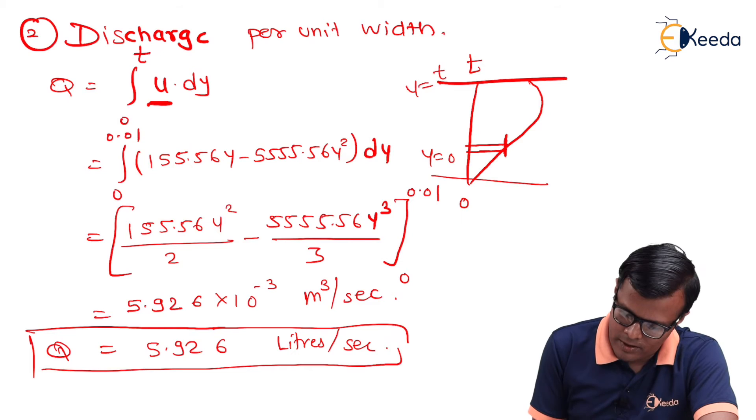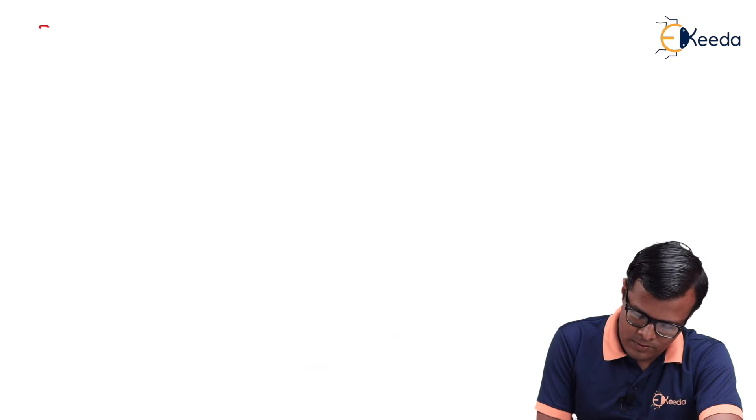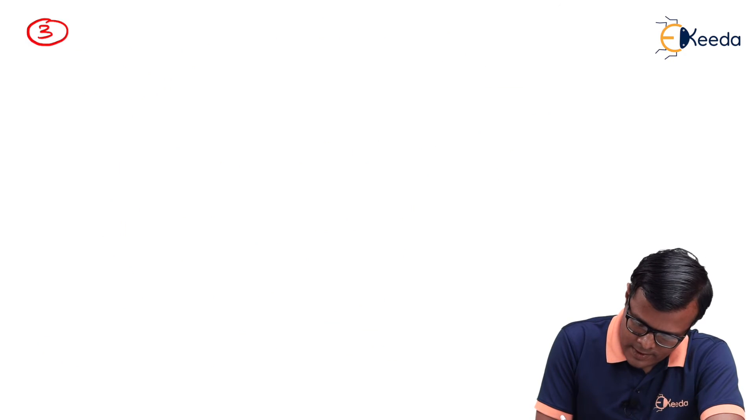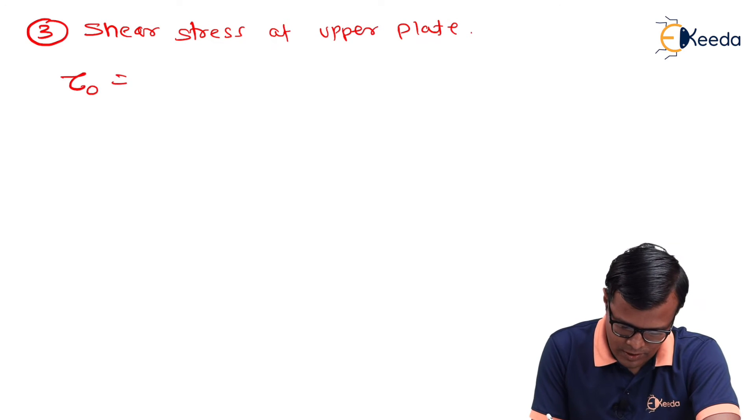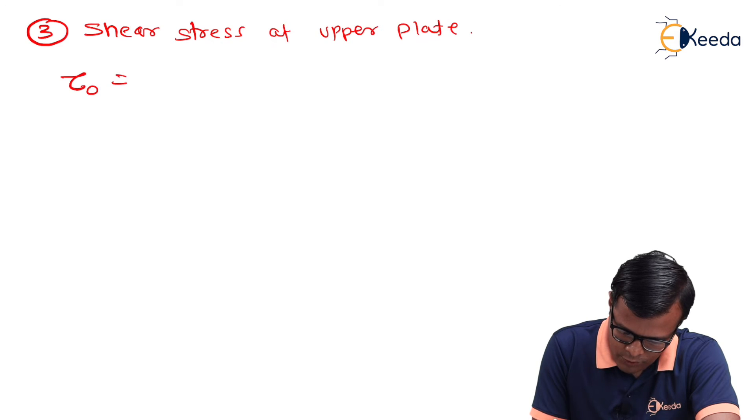So this is the value that is asked in the numerical. Let's move on to third value, that is shear stress at upper plate. τ₀, we will require a basic relation. So at upper plate, τ₀ = μ·du/dy.